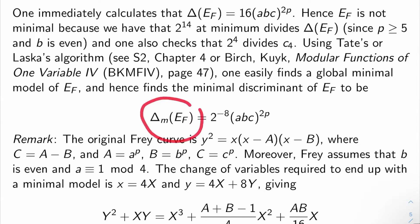You do that, you run your Frey curve through that model, you get your global minimal model, and then you calculate the minimal discriminant of the Frey curve, Δ_m(E_F), and you find that it's 2^(-8)(abc)^(2p). These are just calculations.